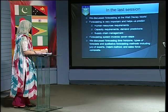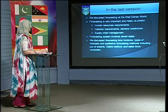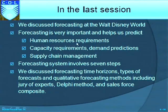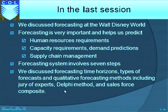Ladies and gentlemen, let us get to work. In the last session, we discussed forecasting at the Walt Disney World. Forecasting is very important and helps us predict human resources requirements, capacity requirements, demand predictions, and supply chain management. The forecasting system involves seven steps. We discussed forecasting time horizons, types of forecasts, and qualitative forecasting methods including Jury of Expert, Delphi Method, and Salesforce Composite.